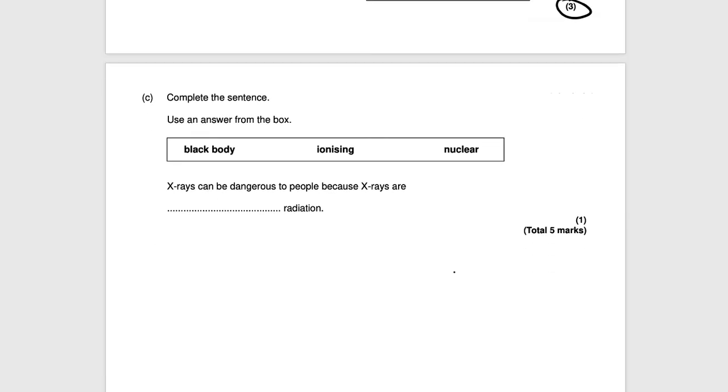Final question. Complete the sentence. Use an answer from the box. X-rays can be dangerous to people because X-rays are what radiation? It's black body, ionizing, or nuclear. X-rays have a really short wavelength and are very penetrating along with gamma rays. So they are dangerous because they are very ionizing. That would get you one mark. That is it for this video. Thanks for watching. I hope you liked it. And one last thing: please subscribe, hit the like button and the notification bell.